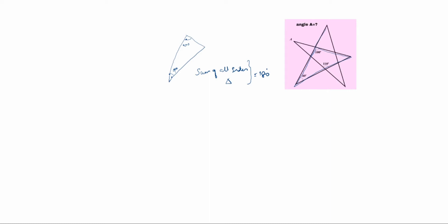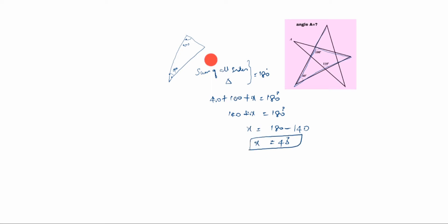So we have: 40 plus 100 plus x is equal to 180 degrees. So 140 plus x is equal to 180 degrees. x is equal to 180 minus 140, equal to 40 degrees. Which one is x? This one is x. So this value is 40 degrees.